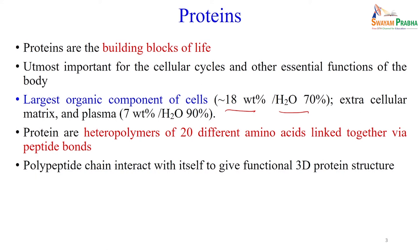In plasma it contains 7 weight percent protein and 90% water. So proteins are the largest organic component of body fluid. Protein can be considered a biopolymer, and its monomer is called amino acids.